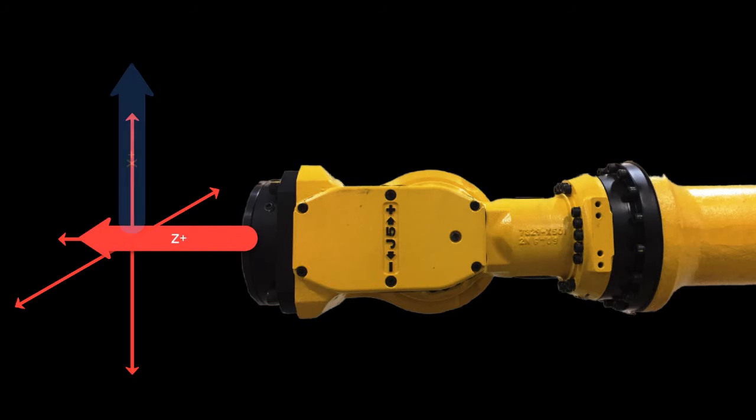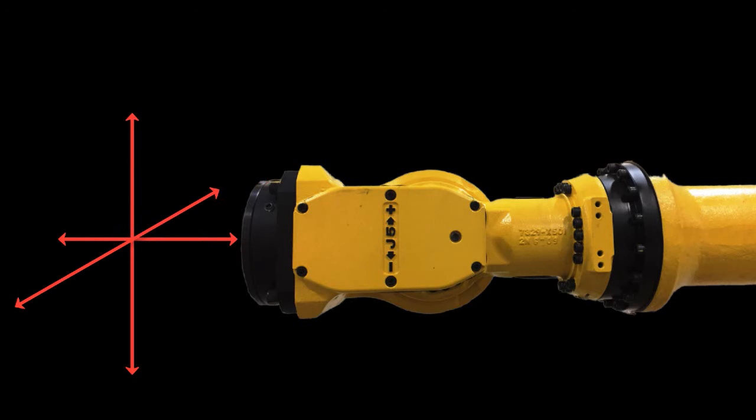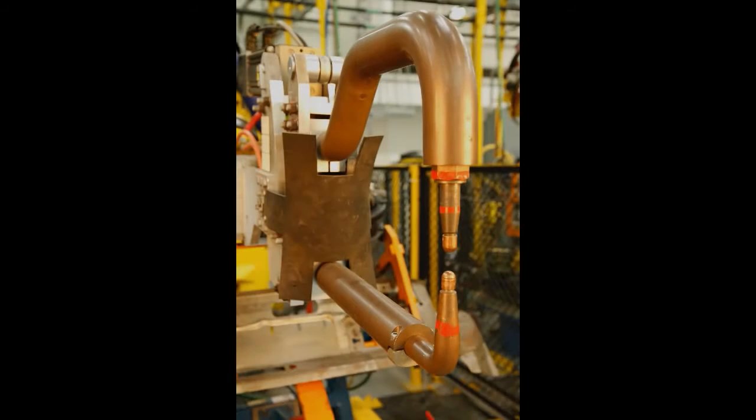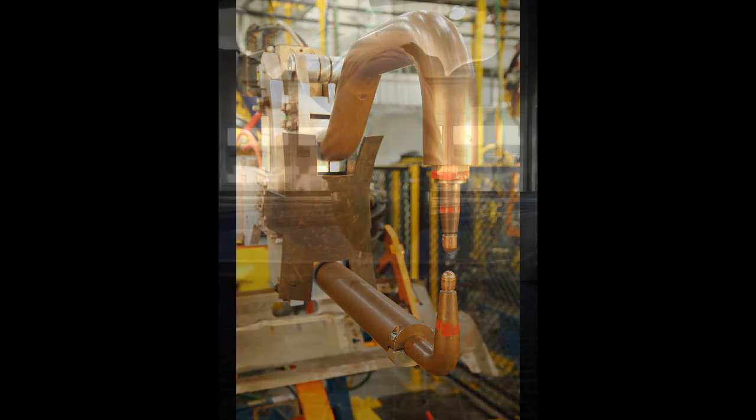When the robot is commissioned for work, the geometry of the mounted tool is added to the faceplate, so that the end effector's tool center point is now an extension of the robot.